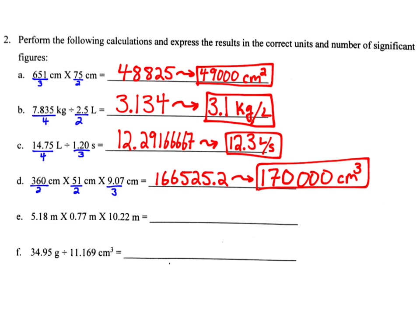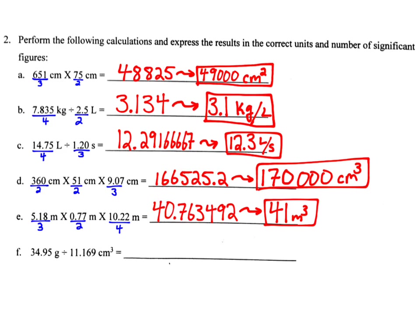Next, we have 5.18 meters times 0.77 meters times 10.22 meters. 5.18 has three sig figs. 0.77 has two sig figs because the zero at the beginning is not significant. 10.22 has four sig figs because the zero in between the one and the two is significant. But we already know our answer cannot have more than two because 0.77 has just two. When we do the math, our calculator gives us 40.763492, but we round to two significant figures, giving us 41. Our units are meters cubed. That's our final answer.